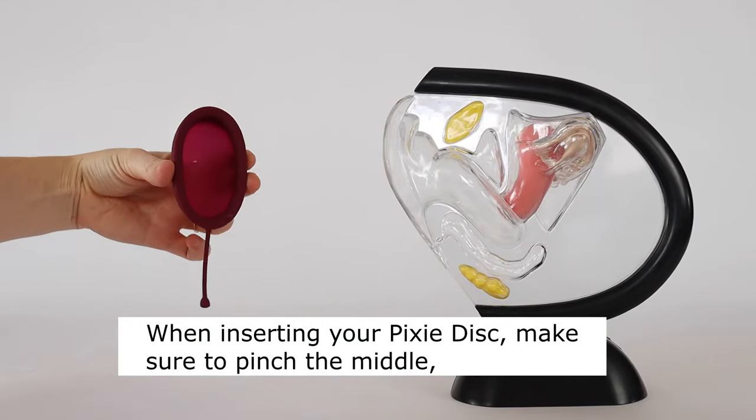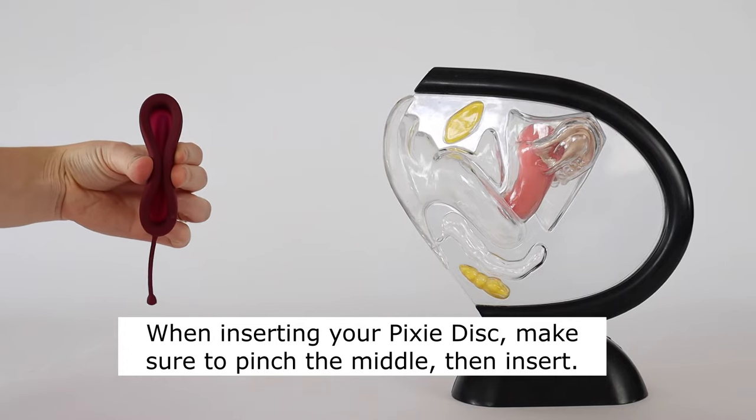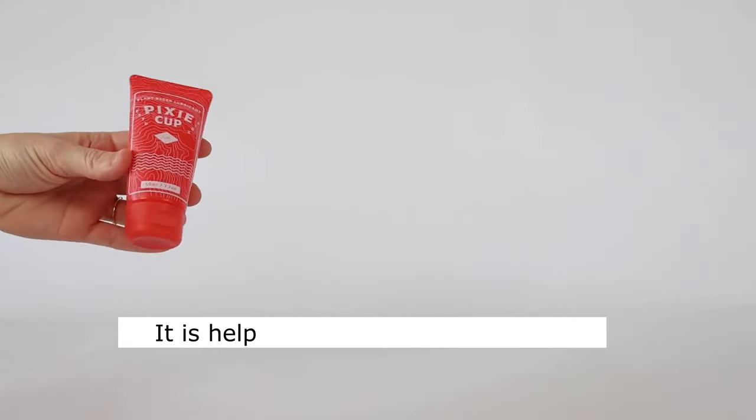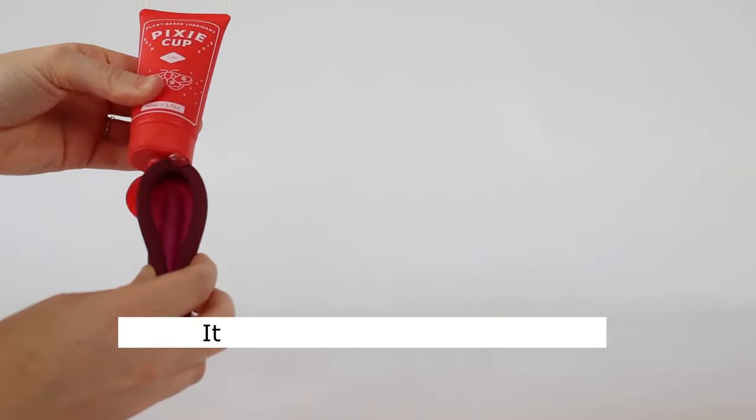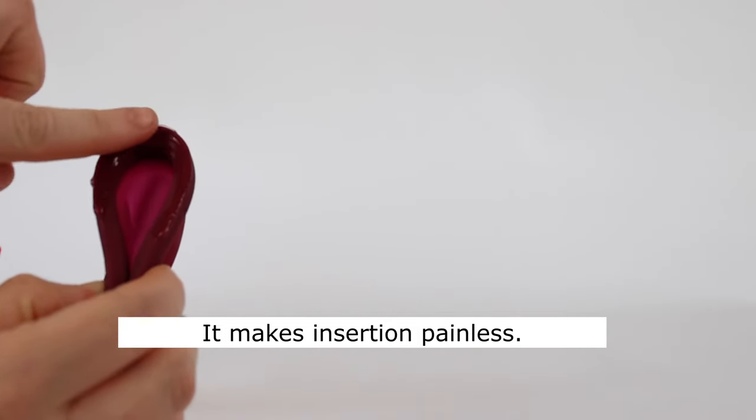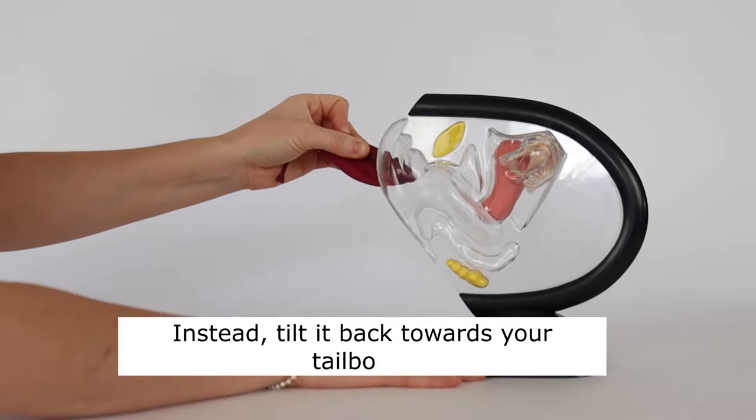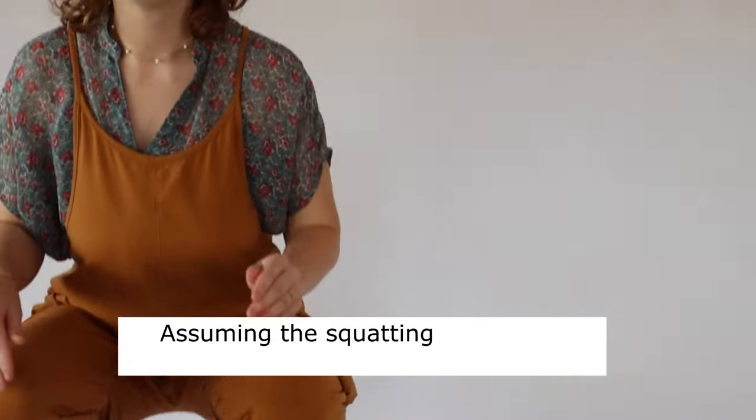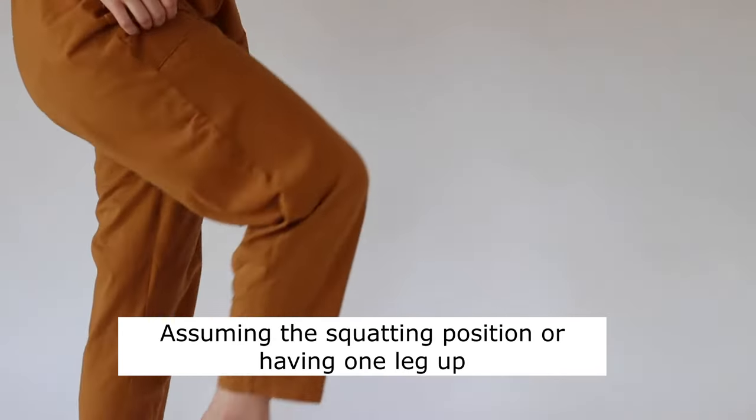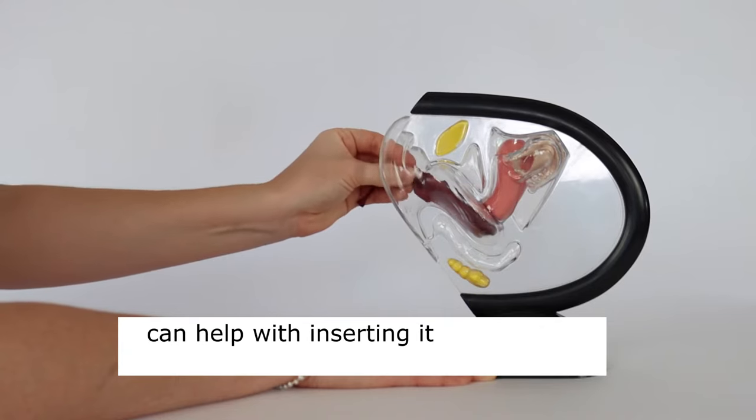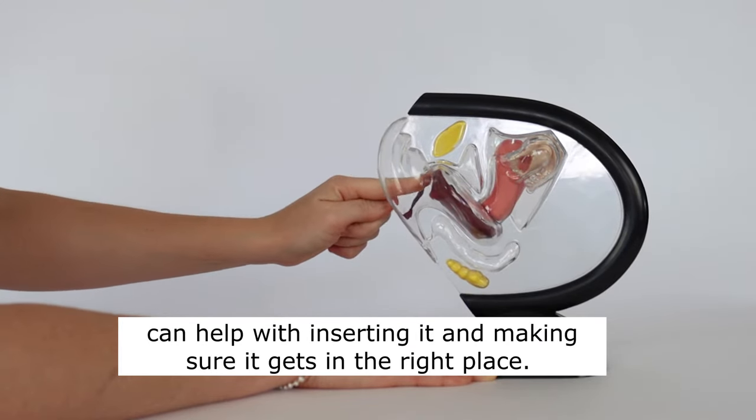When inserting your Pixie disc make sure to pinch the middle of the disc and then insert. It is helpful to use some Pixie Lube. This does make for a painless insertion. Now you don't want to insert it straight back. Instead tilt it downwards towards your tailbone. Assuming the squatting position or having one leg up can help with inserting it and making sure it gets in the right place.